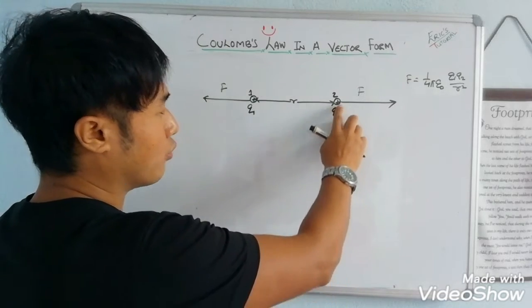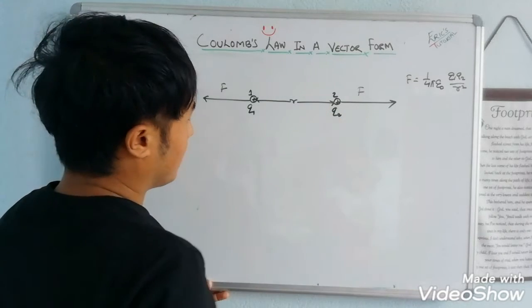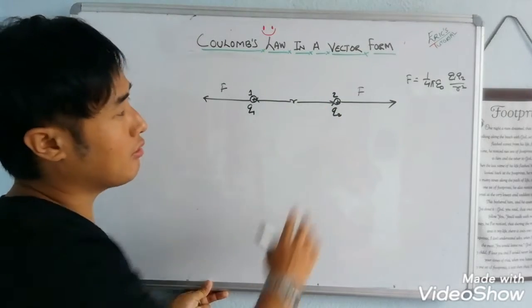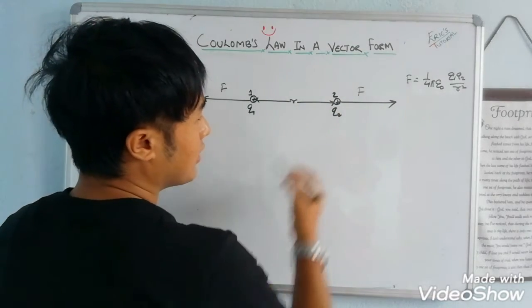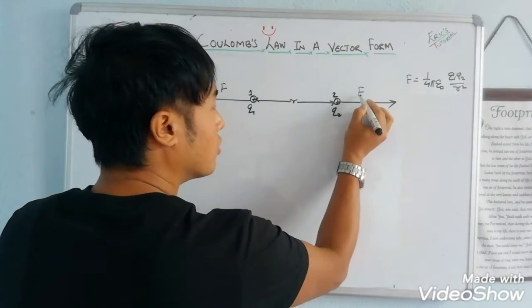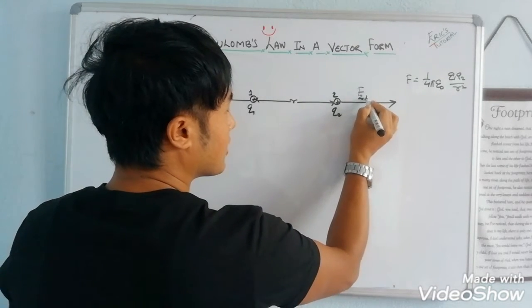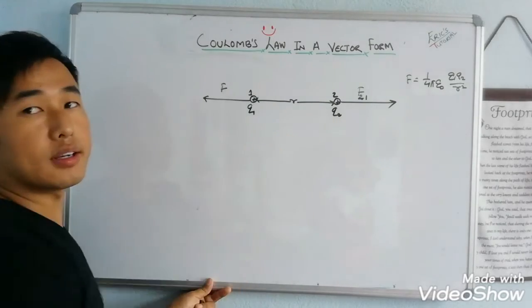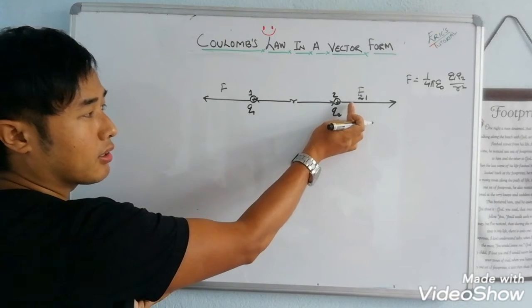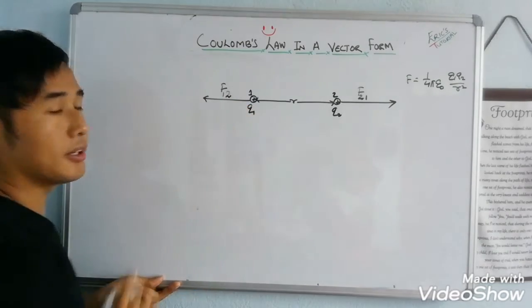I will simply give the name F and F because force magnitude is the same. This repulsive force, the force on Q2 is due to Q1. The force on Q1 is due to Q2. Charge 2 experiences force from charge 1. In the same manner, Q1 experiences force from Q2.